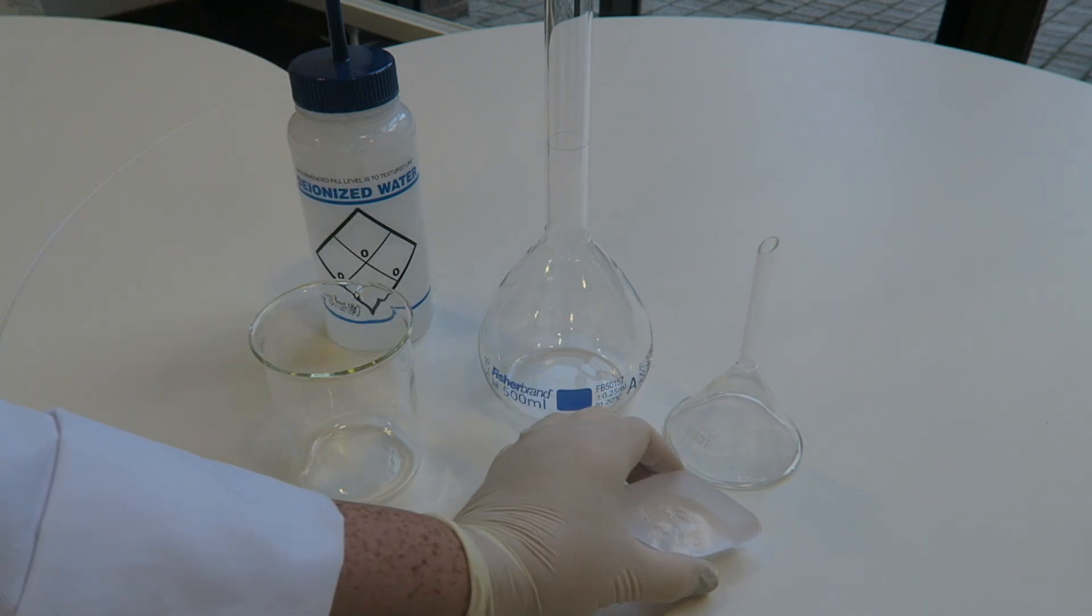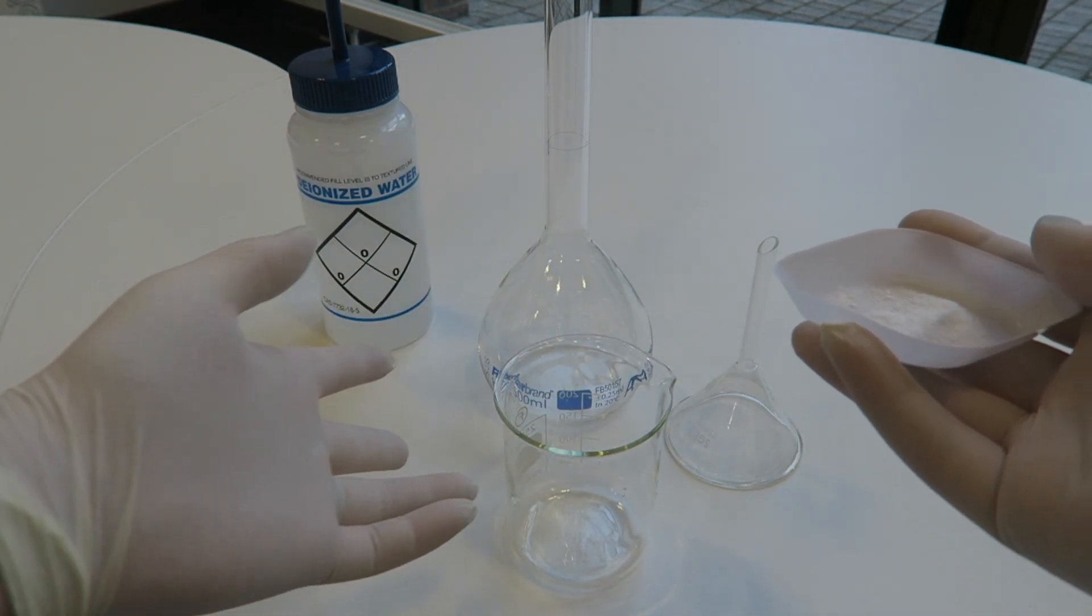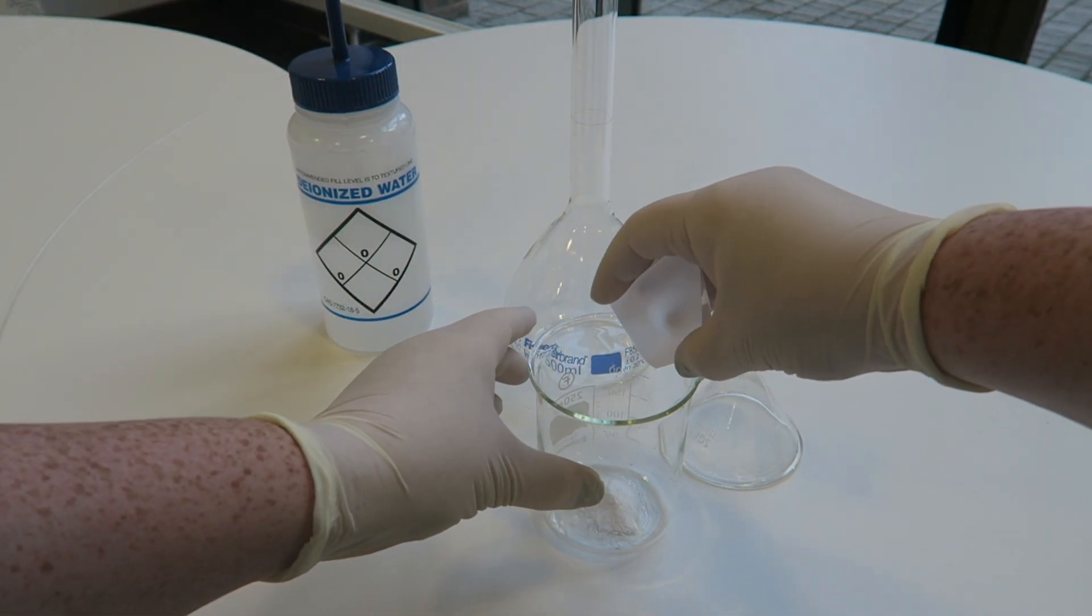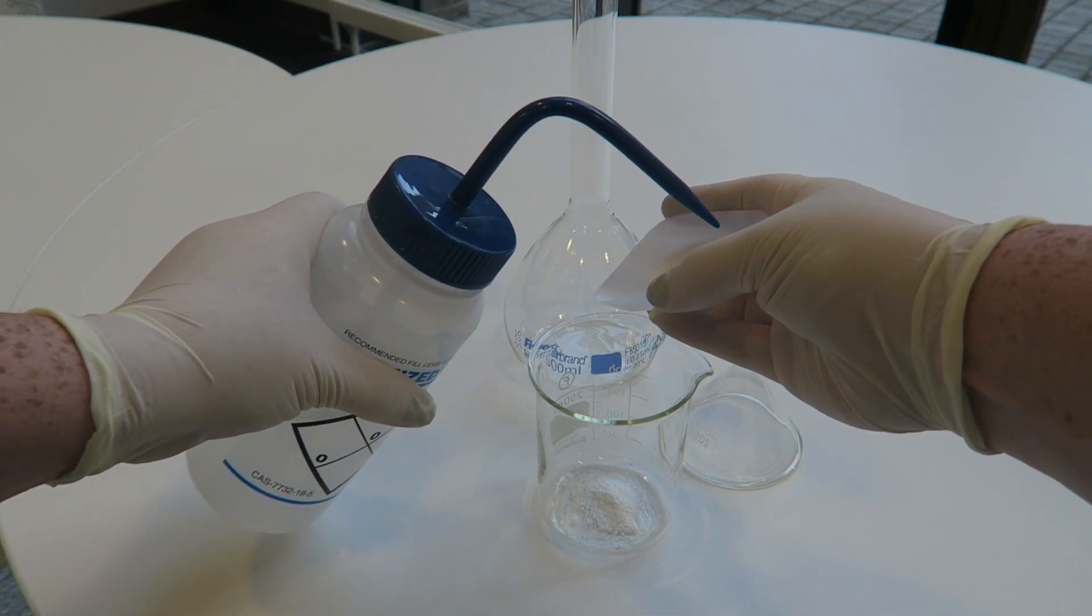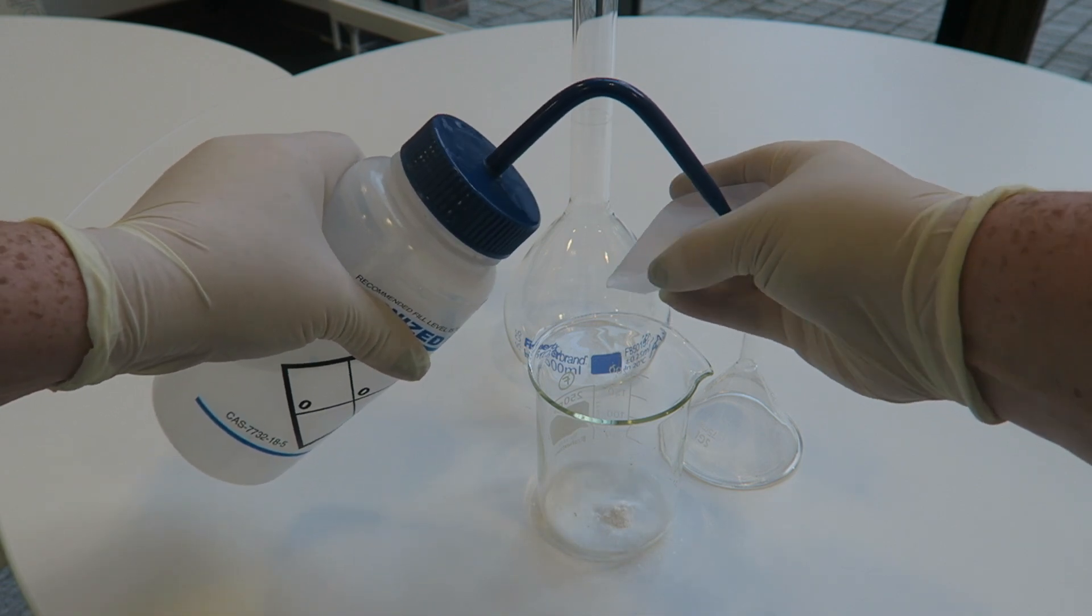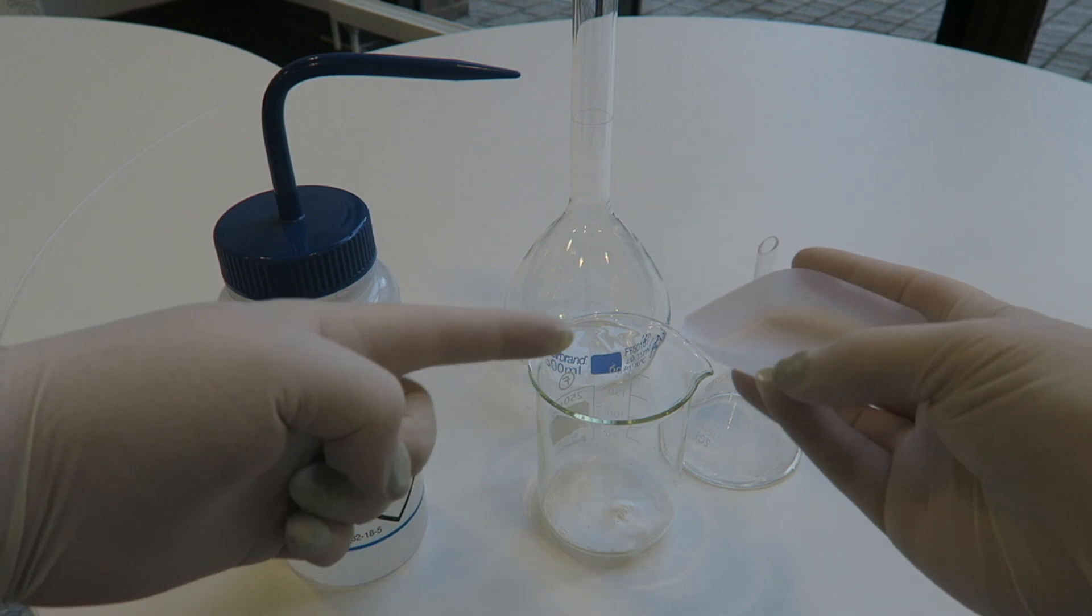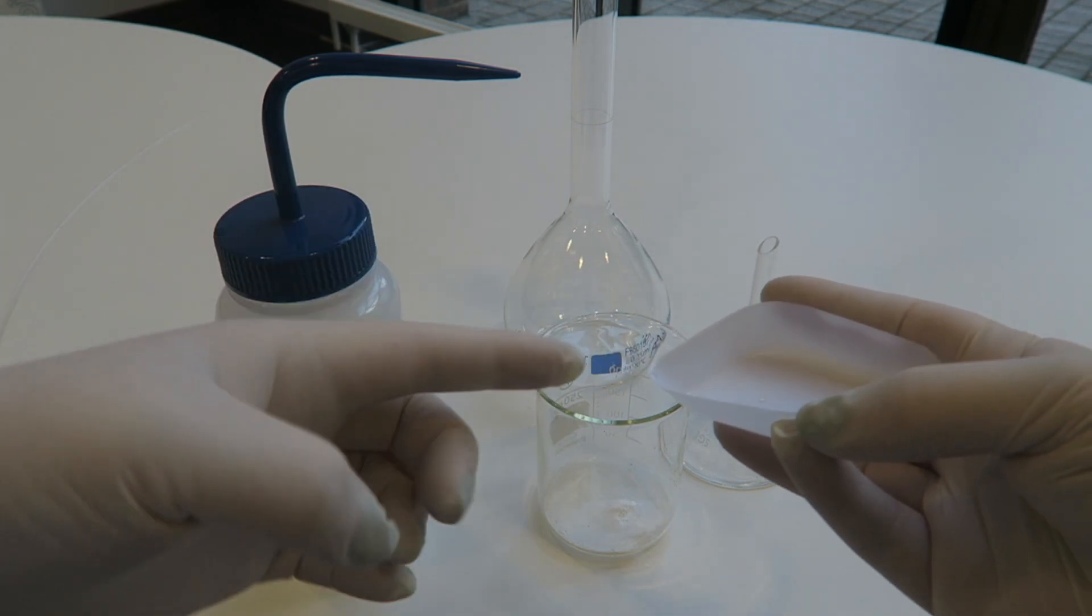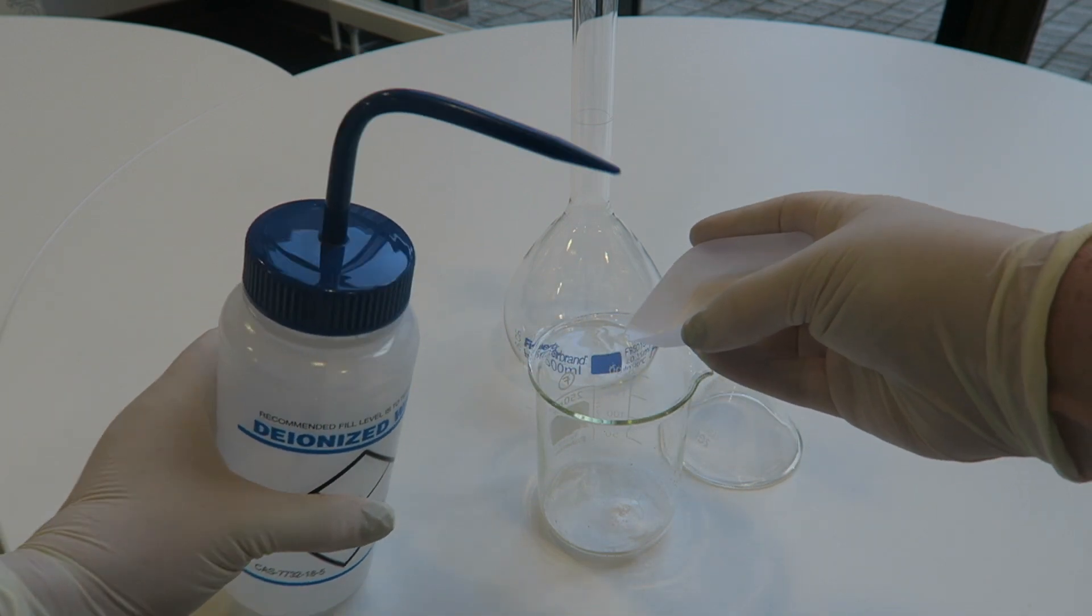We're going to take our known volume of powder and put it into our beaker with some water. Now what I'm going to do is wash the weigh boats to make sure that all of the powder from the weigh boat is in the beaker. So that is the key thing that we need to do: make sure all of the powder that we measured in the weigh boat ends up in the volumetric flask.